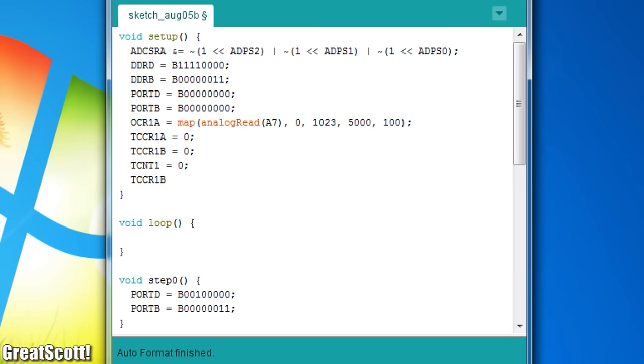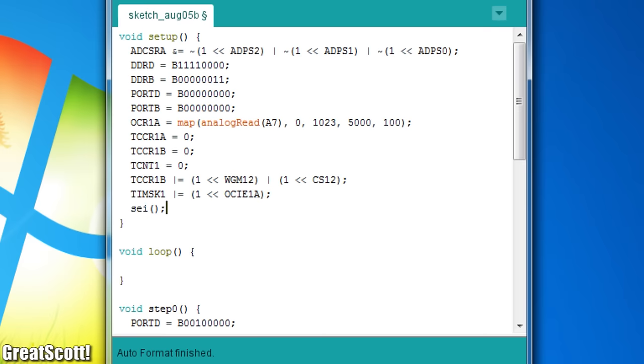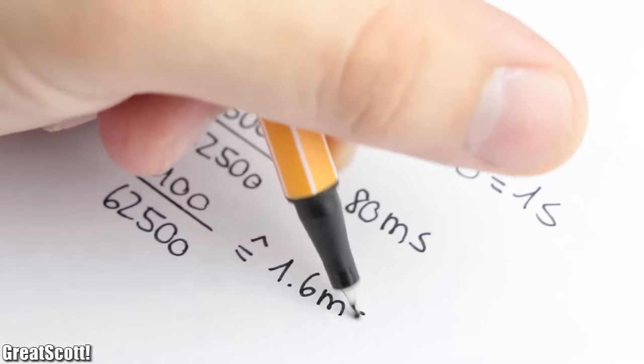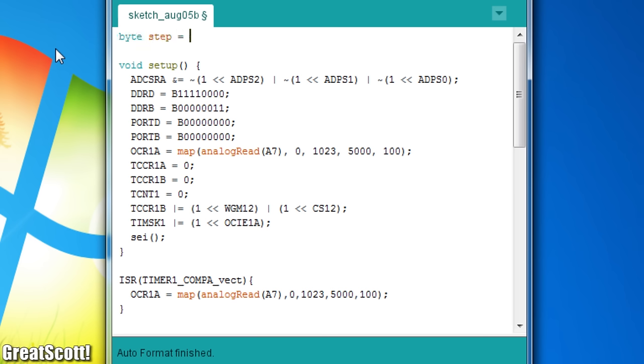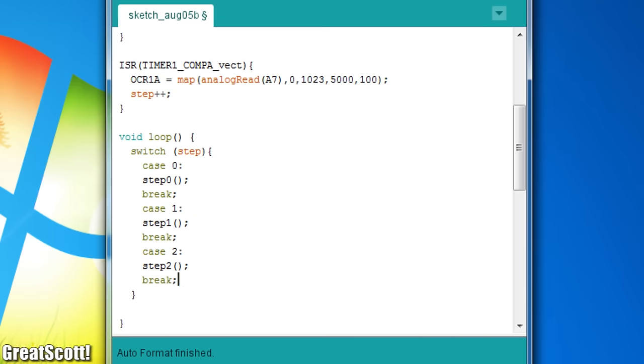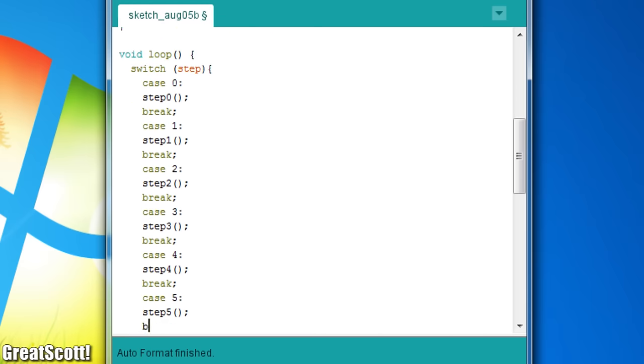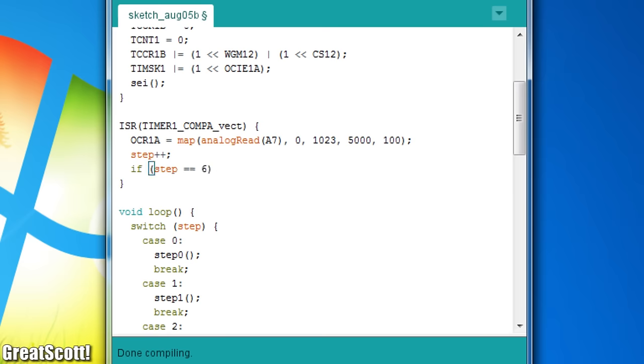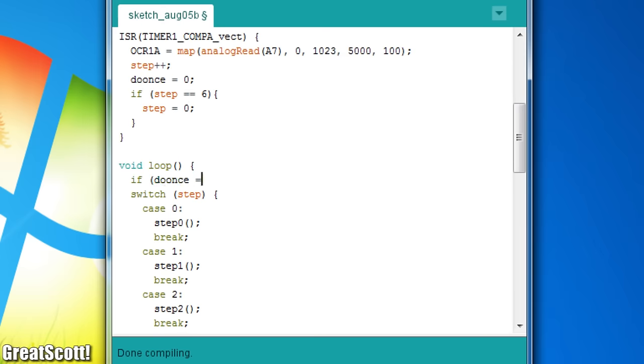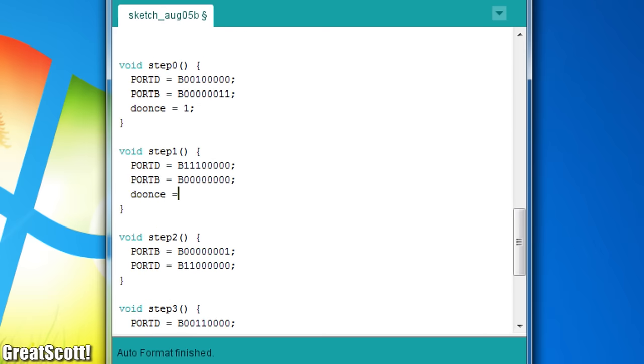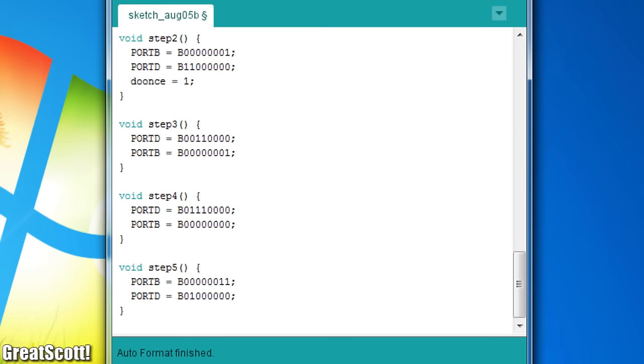So after completing the step functions, I configured the timer 1 of the Arduino so that it creates a timer compare interrupt in a time interval between 80 and 1.6 milliseconds, according to the position of the potentiometer. The point of this interrupt is to increase a counter variable called step, which I used in the main loop to switch between the different step functions. And of course, if the step counter reaches the value of 6, it starts over at 0. And additionally, I also added a do-once flag so that the output registers do not get rewritten continuously.